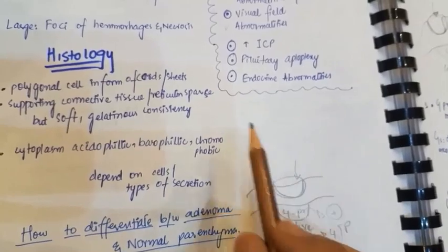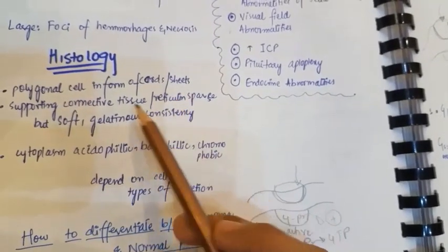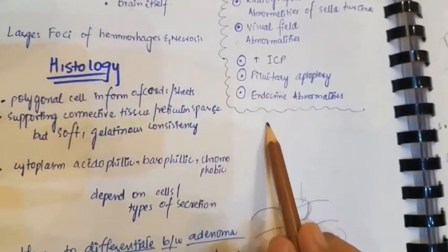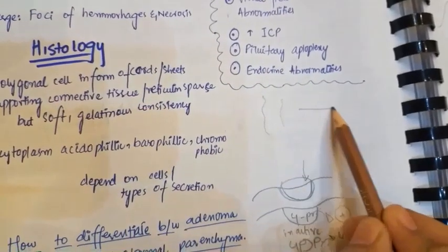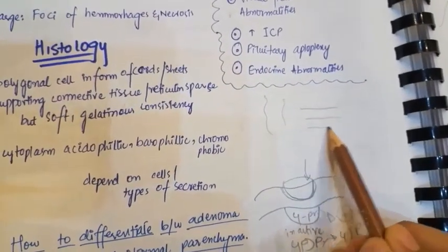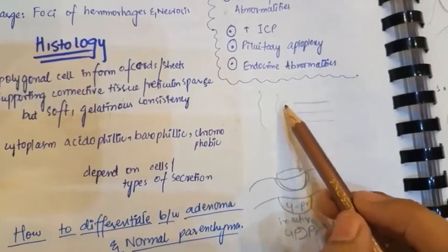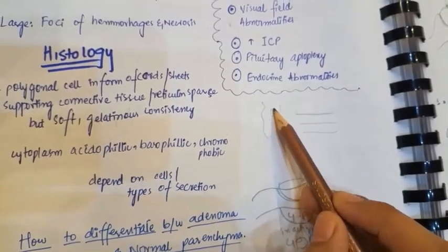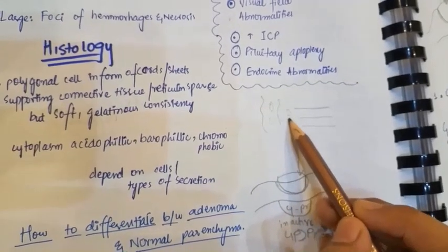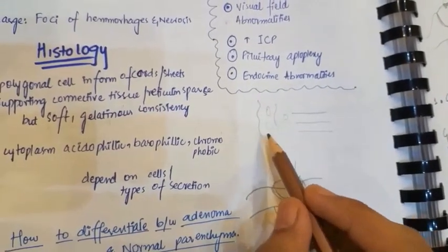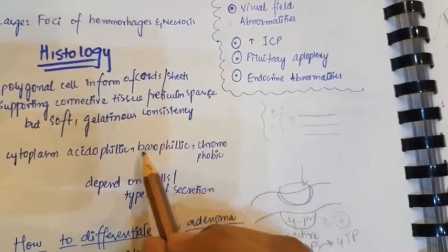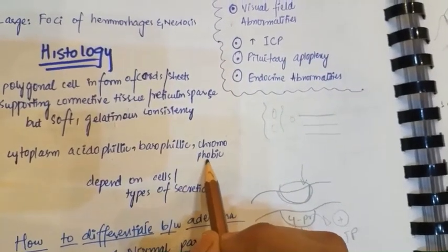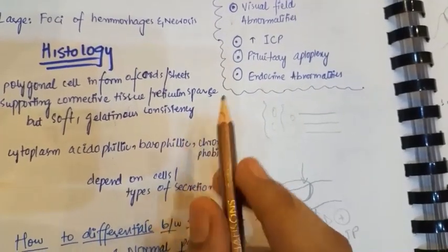In histology, we will see polygonal cells arranged in the form of cords or sheets with sparse supporting connective tissue between the cords. The cytoplasm of these polygonal cells can be acidophilic, basophilic, or chromophobic, depending on the type of secretions.